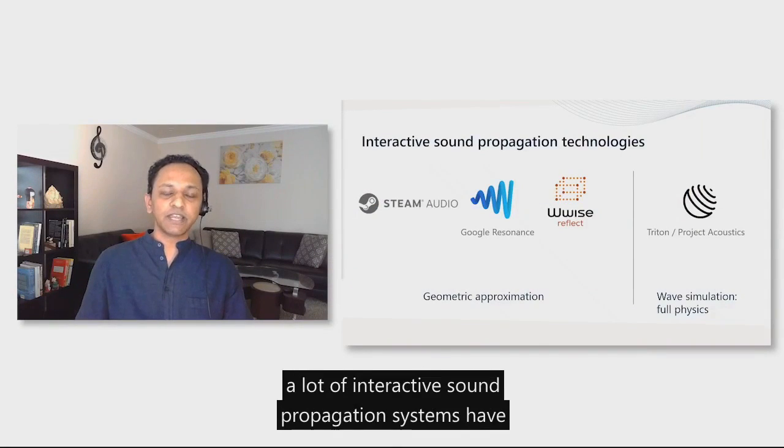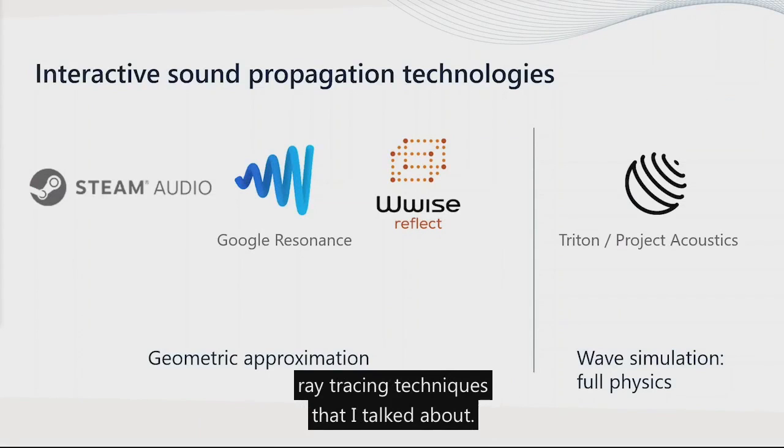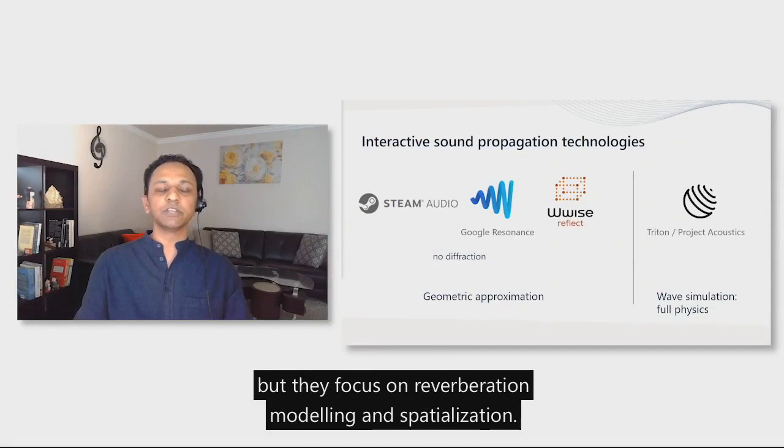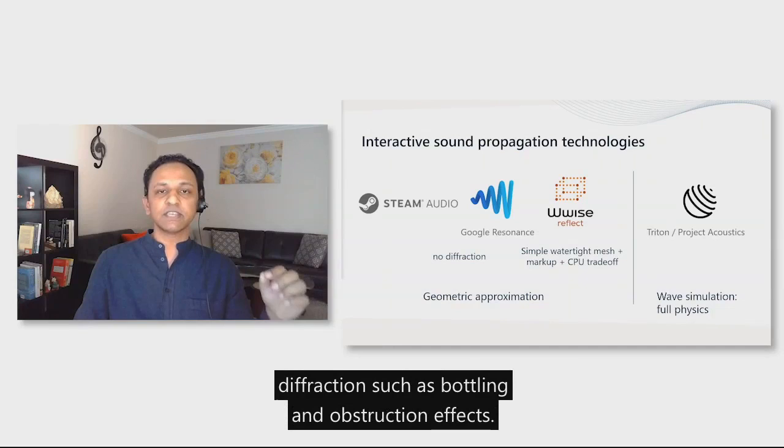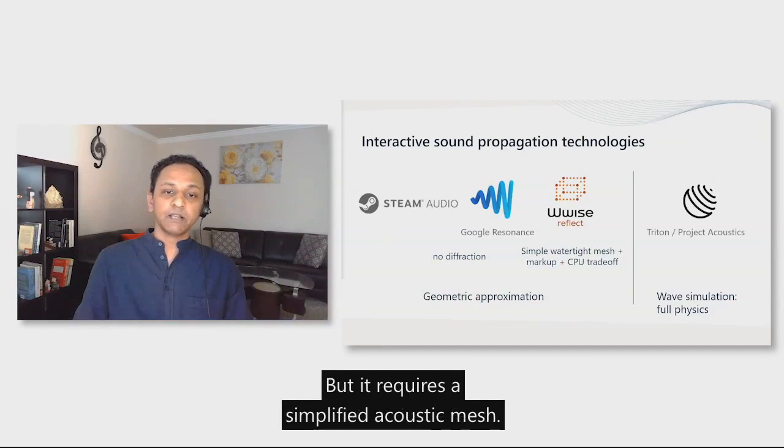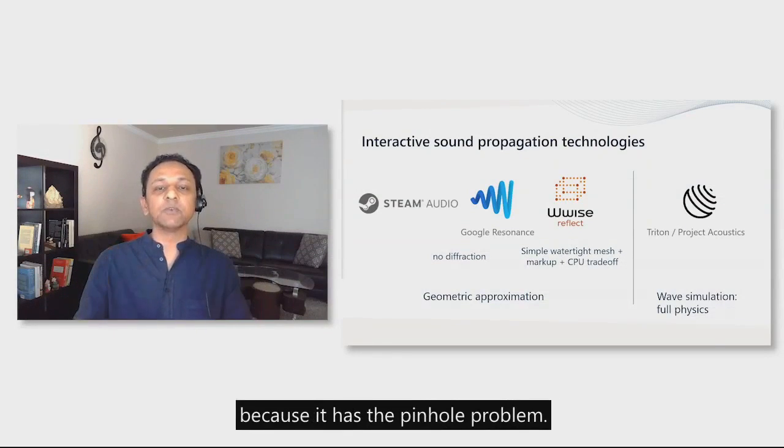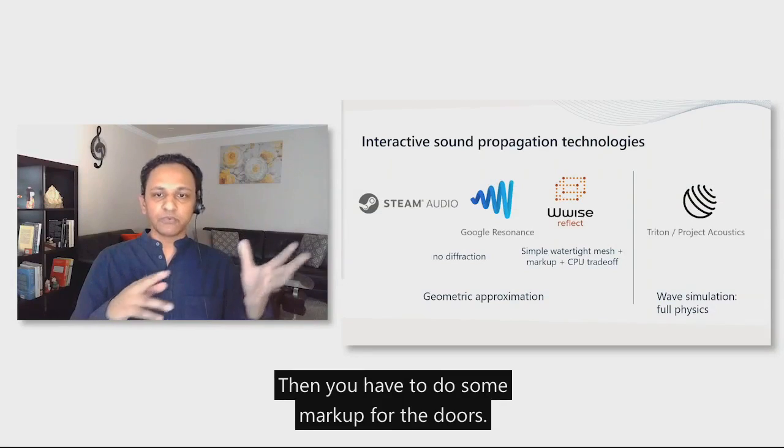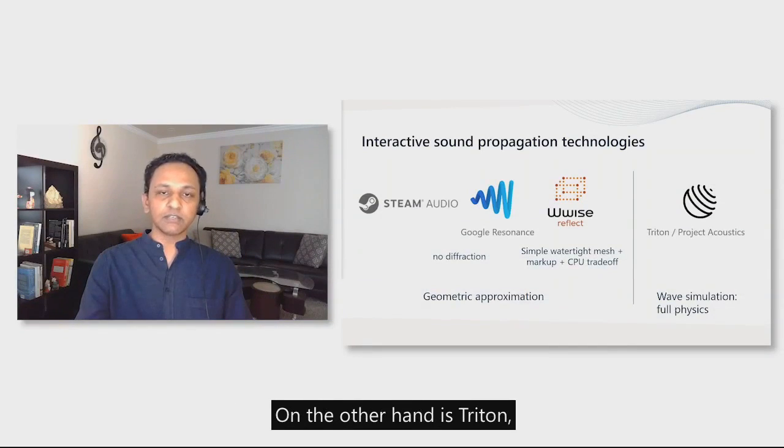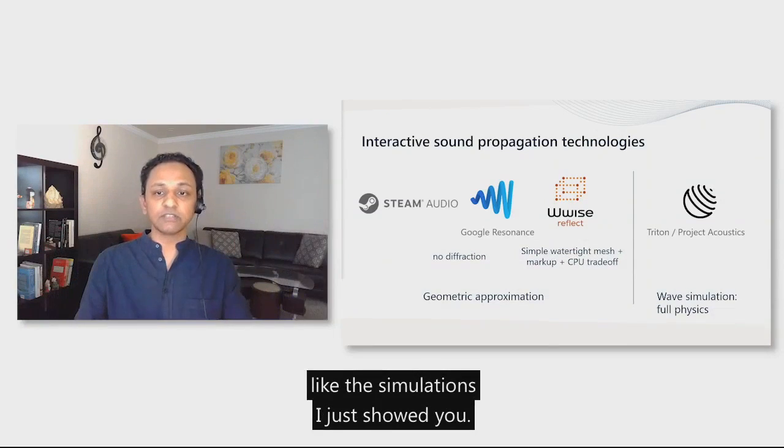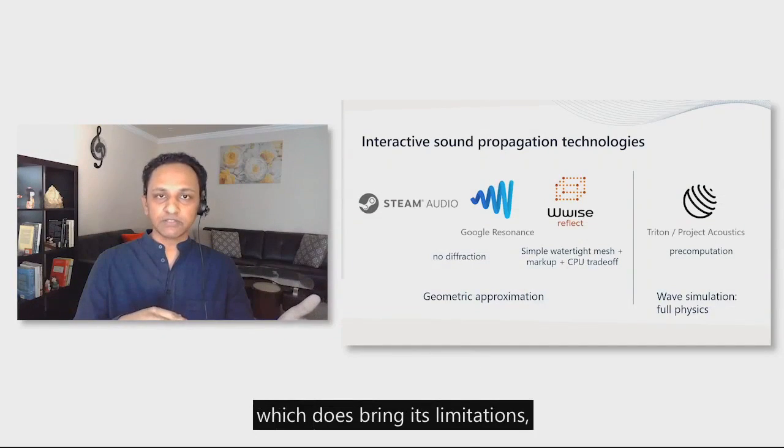To solve these issues, a lot of interactive sound propagation systems have been proposed to automate this process. The systems on the left use geometric approximation, ray tracing techniques. Steam Audio and Google Resonance don't model diffraction, but they focus on reverberation modeling and spatialization. WWISE Reflect tries to model diffraction such as portaling and obstruction effects. But it requires a simplified acoustic mesh. So you have to take your scene and make a simplified version that's watertight because it has the pinhole problem. You have to do some markup for the doors. And if the scene gets very complex, the CPU cost starts going up. So there's a trade off there to balance. On the other hand is Triton, which I'm going to talk about today, which uses the wave simulation like the simulations I just showed you. So it does full physical modeling. It includes all the diffraction effects. But the cost for that is pre-computation, which does bring its limitations, which I'll get into.